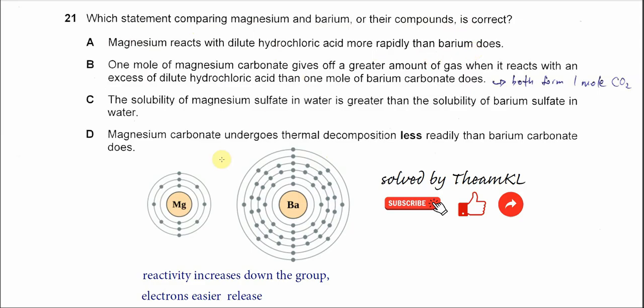So this one is a wrong statement. Even with water, barium reacts with water more vigorously compared to magnesium. Why? Because barium has more electron shells as you can see here, and it has more shielding, and the valence electrons are easier to release and it's easier for barium to react with others like water and acid.